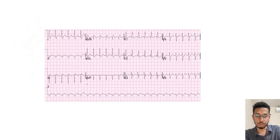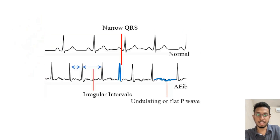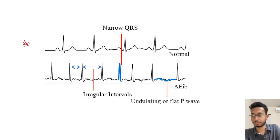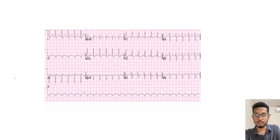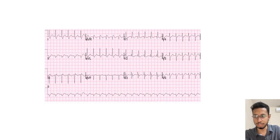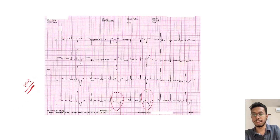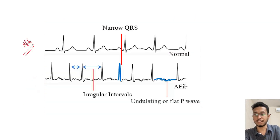Regarding arrhythmias that can present with MVP: narrow complex irregular rhythm with undulating or flat P-waves represents atrial fibrillation. VPCs can also be seen. Wide complex tachycardia represents VT. These are the arrhythmias which can be seen in mitral valve prolapse.